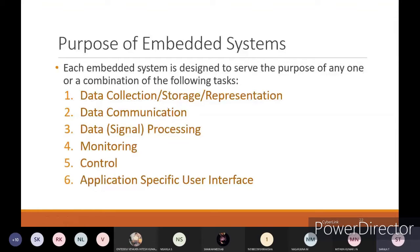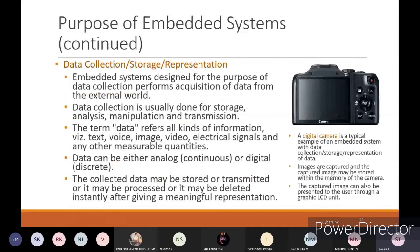The first purpose of embedded systems we are taking is data collection and storage and representation. The best example for this will be a digital camera. An embedded system designed for the purpose of data collection performs acquisition of data from the external world, collecting it in your device. Data collection is usually done for storage, analysis, manipulation, and transmission.